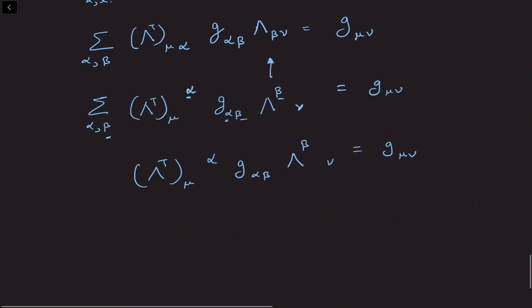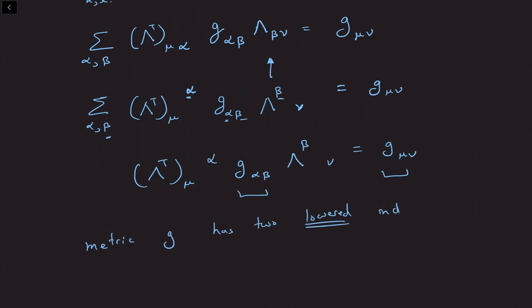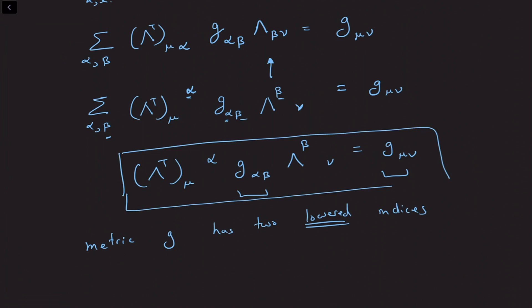With this convention, we see that the metric g has two lowered indices. And this is the defining equation of the Lorentz group in index notation.